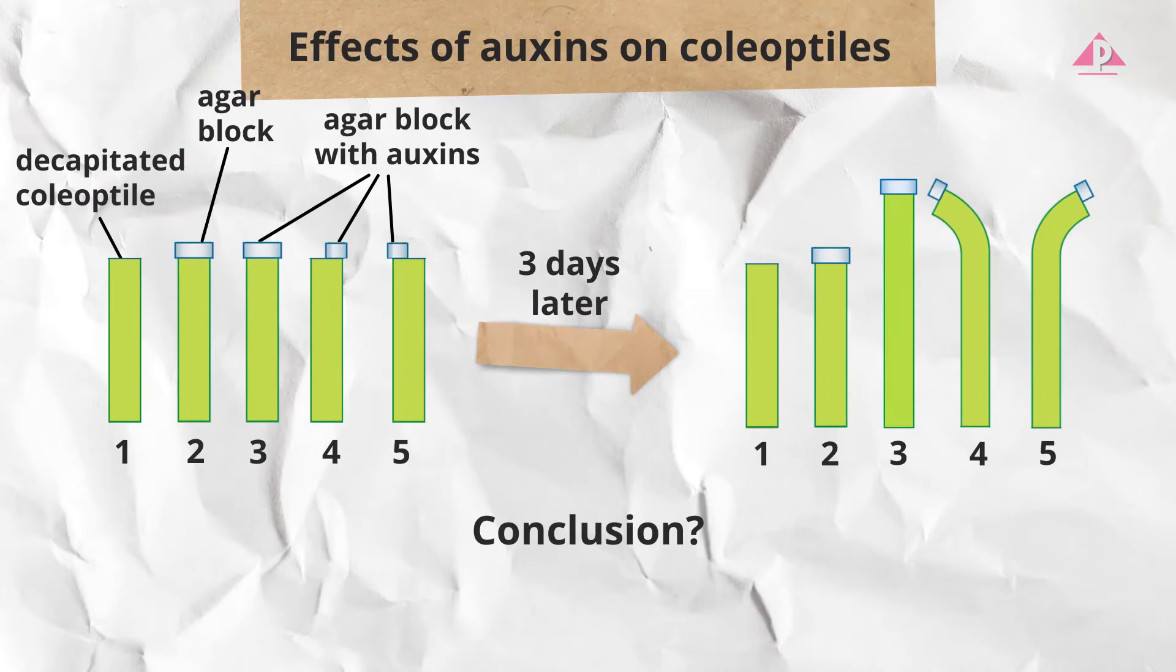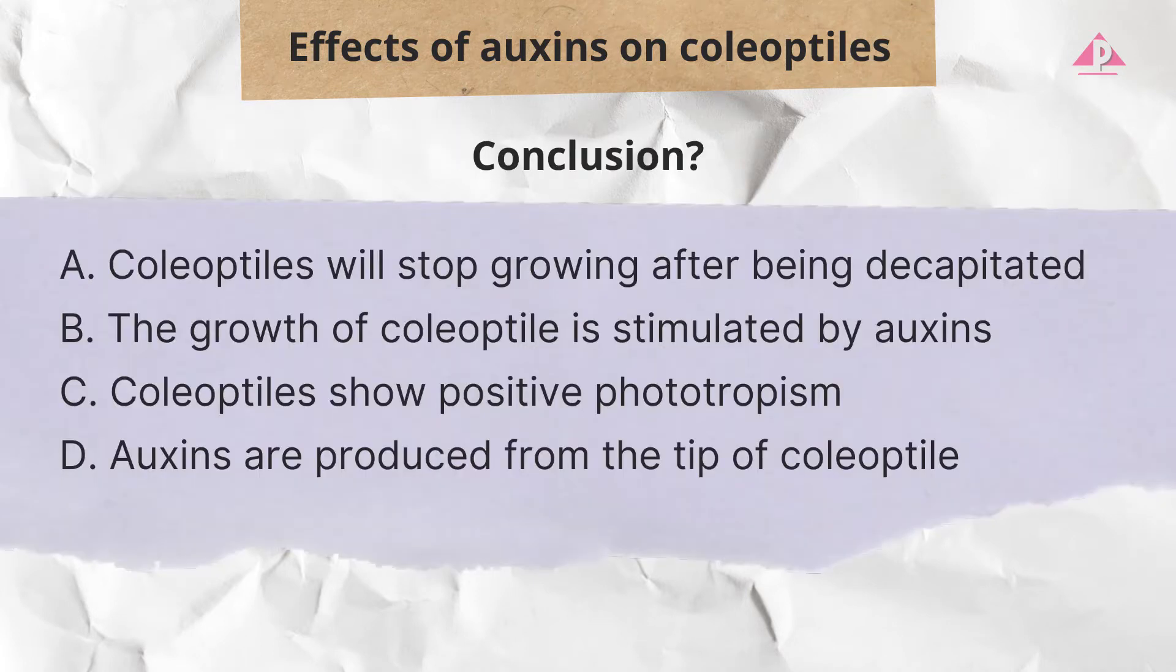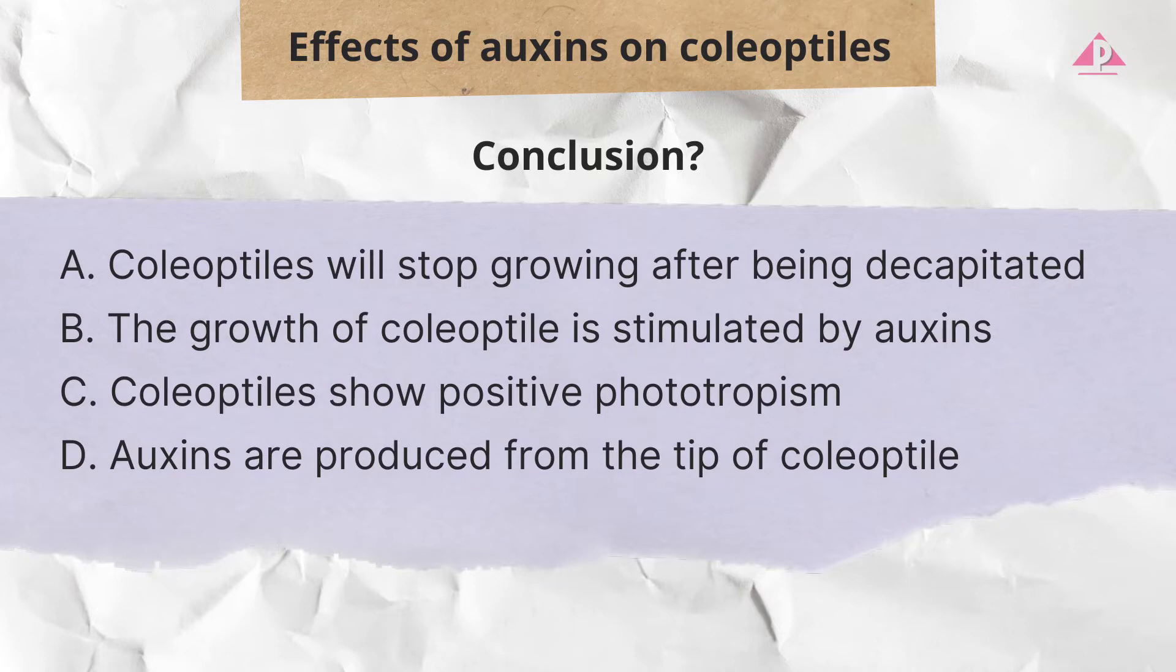Drawing conclusion is also a frequently asked question type in exams. These setups are used to study the effect of auxins on coleoptiles. This question requires students to choose the best conclusion based on the experimental result. Usually there are four statements to choose from but only one of them can be supported by the result and correspond to the aim of the experiment. The aim of this experiment is to study the effect of auxins on coleoptiles.